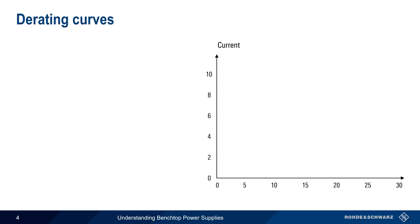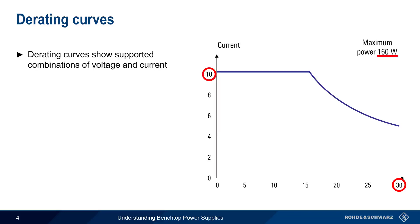The combinations of voltage and current supported by a power supply are often shown using a derating curve. On the right is an example of a typical derating curve for a supply with a maximum current of 10 amps, maximum voltage of 30 volts, and a maximum power of 160 watts. Any combination of voltage or current that falls on or below this curve, that is, in the colored area, is supported by the supply.